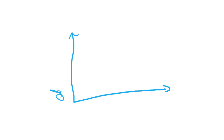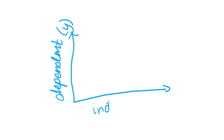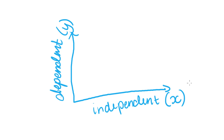Being able to tell these apart is important for a couple of reasons. First, when we graph two variables on a scatterplot, you always put the dependent variable on the vertical axis or y-axis, and you put the independent variable along the horizontal axis or x-axis. So you need to be able to tell which is which before you can graph them.